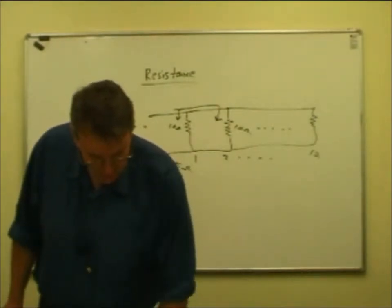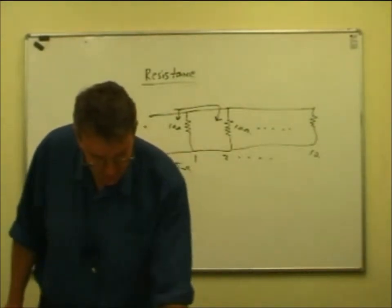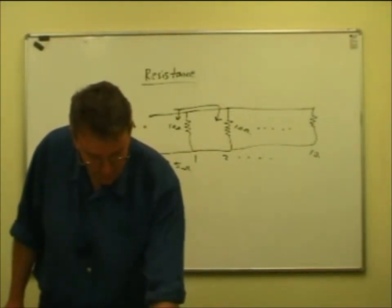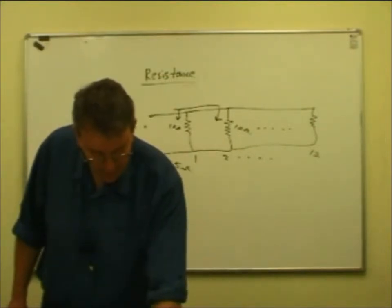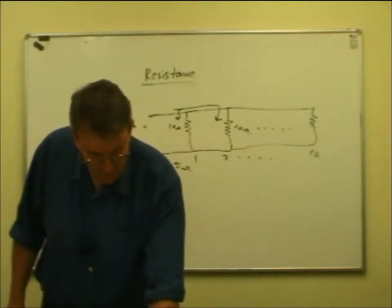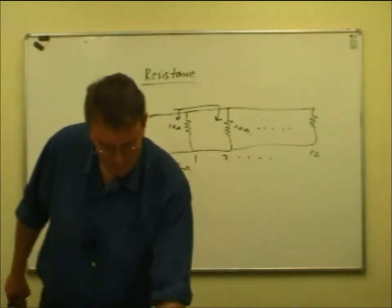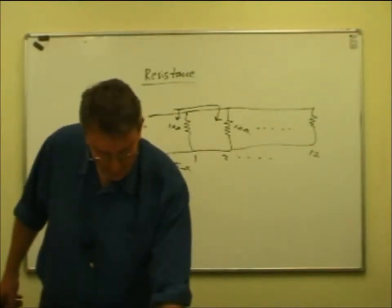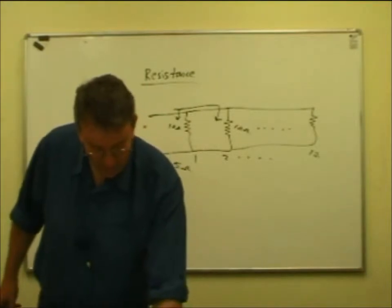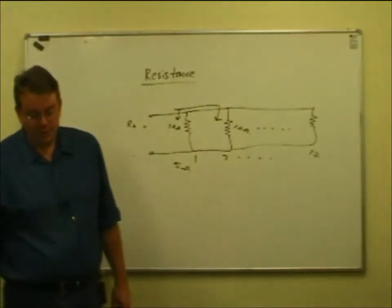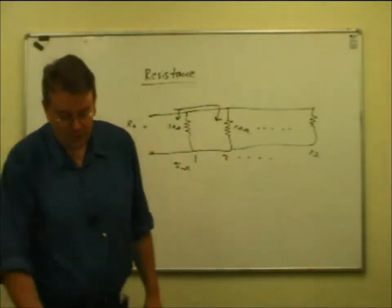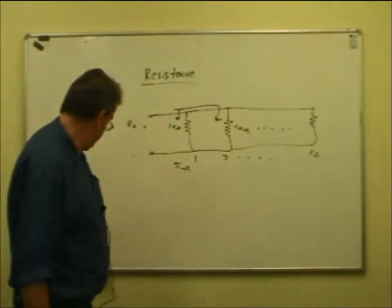Question 17: you have 10 resistors of equal value R wired in parallel. The total resistance is - well, not the same as R, not 10R (that would be series). The answer is R over 10, in other words 1 tenth - which is the correct answer, D: R over 10.